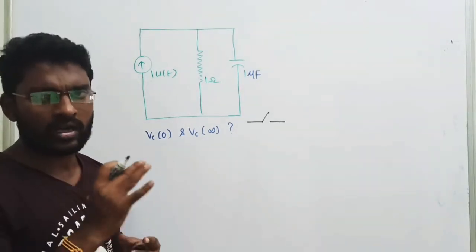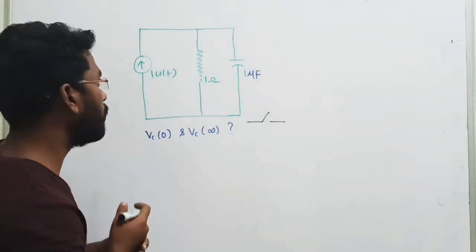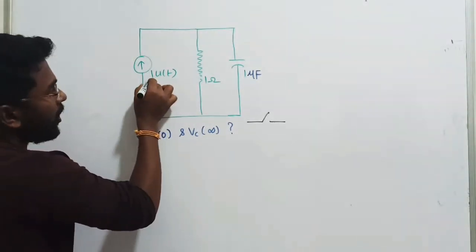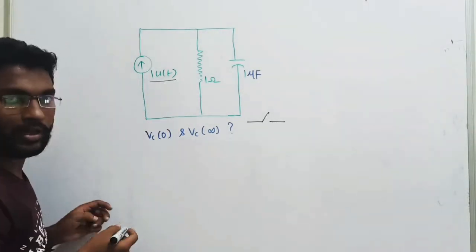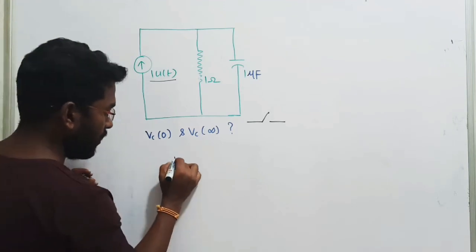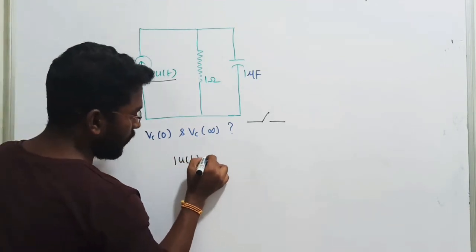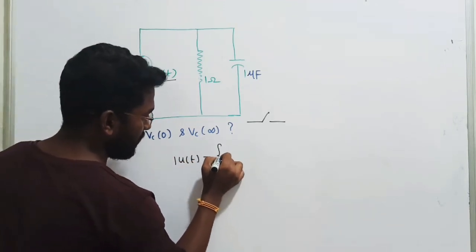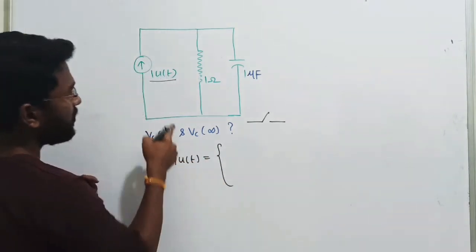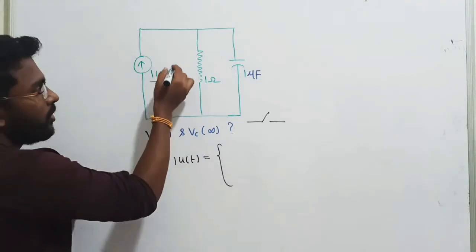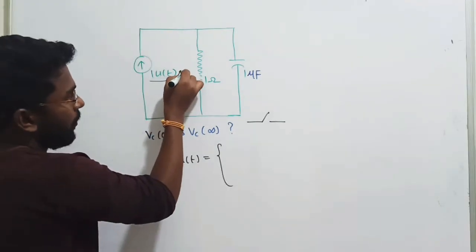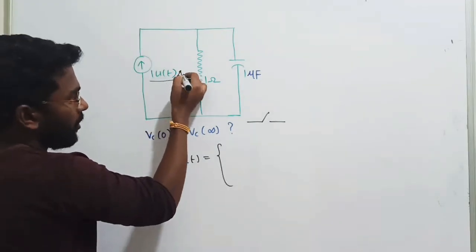That is called what? Hidden switch. The name is hidden switch, that we know. So in the 1 into u(t), you will be able to write. This 1 into u(t) can be written like this. This is current only, so you will give it in amperes.